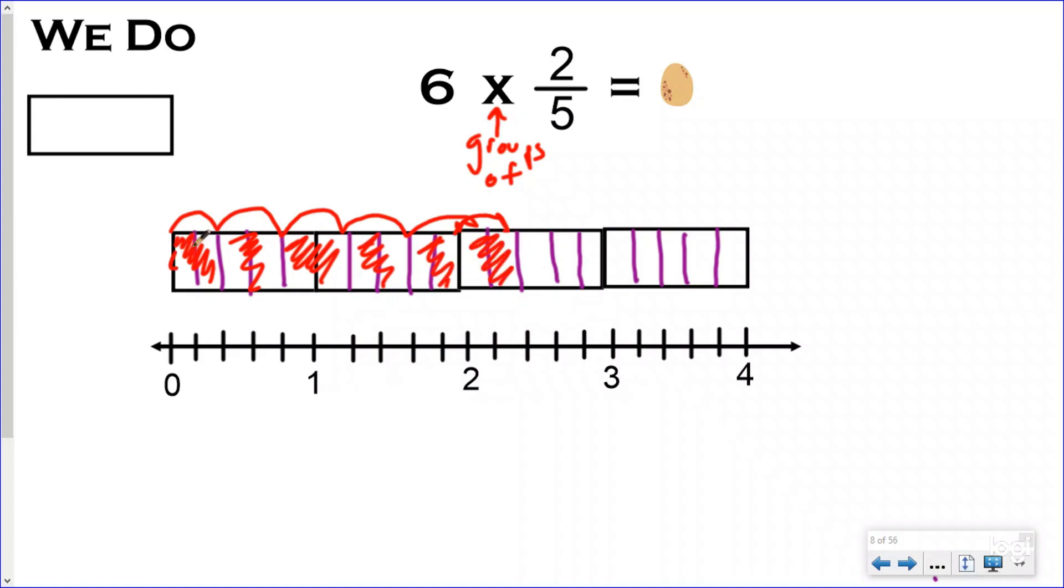Right now I will shade in my six groups of 2/5. And I can see when I did that I had two wholes completely shaded in with a leftover of 2/5. So I have 2 and 2/5 getting out of my cracked dinosaur egg. Another way I could write that would be as an improper fraction. And I had one, two, three, four, five, six, seven, eight, nine, 10, 11, 12/5. So either one of those would work. And when I do this on my number line as well, one, two, three, four, five, and six, you can see I still come up with 2 and 2/5, which can be rewritten as 12/5 as the improper fraction.